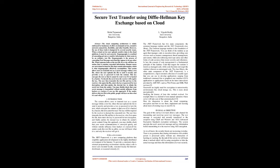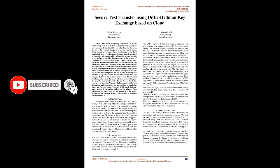Steganography is a method of concealing private or sensitive information in what seems to be an ordinary text file. It is the process of concealing text messages such that they appear to be any other file. When someone looks at the text file, he or she will have no notion that it contains concealed information. Human senses are not trained to hunt for files that contain information, which is what steganography effectively accomplishes. This system allows users to transmit text as a secret message within a text file, where the user uploads the file to send it secretly and provides a key or password to lock the content.